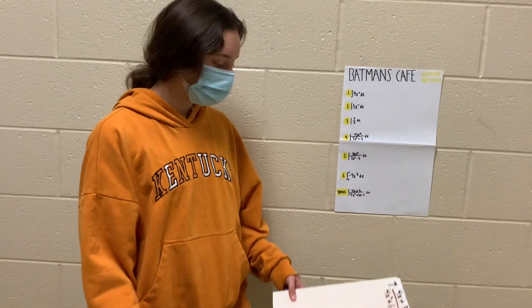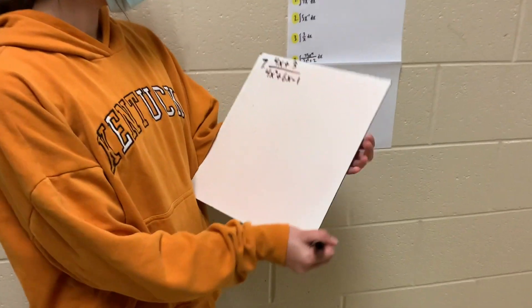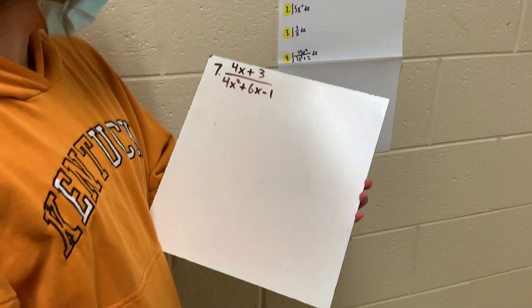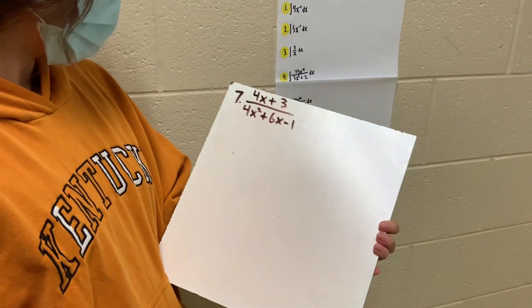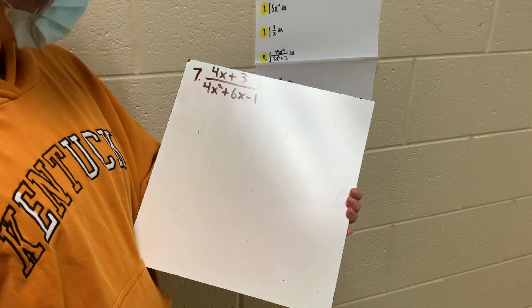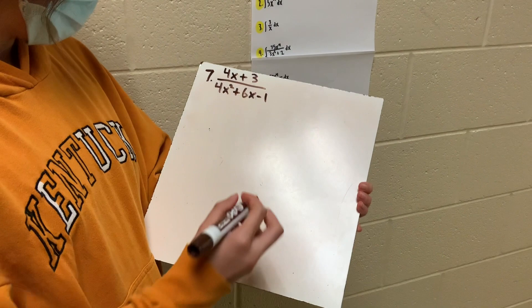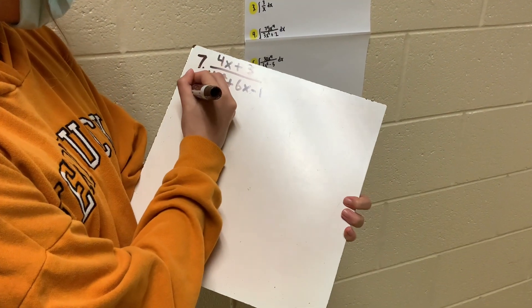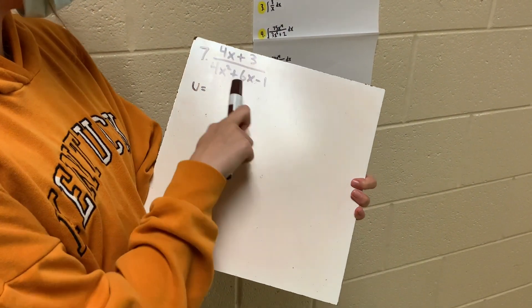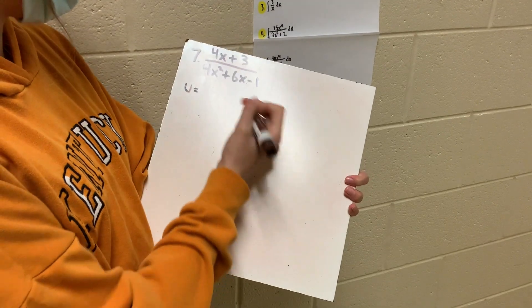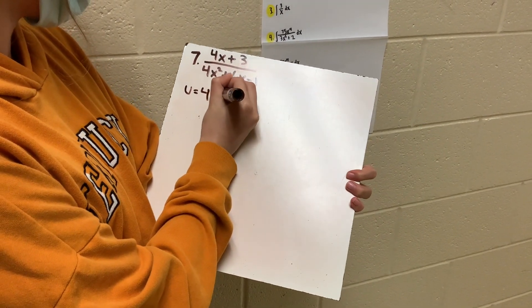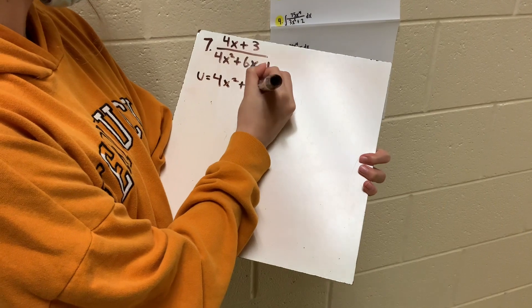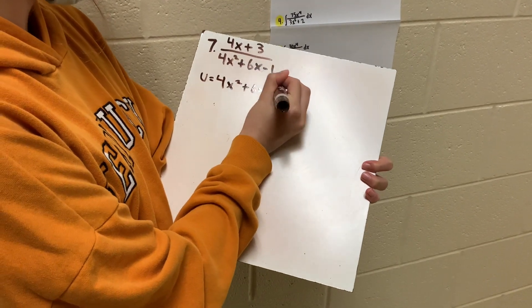Hi, can I get today's bonus? So that equation is 4x plus 3 over 4x squared plus 6x minus 1. So for this, we'll be using the u-sub method. And first we'll have to find the u, which would be equal to this trinomial because it has the higher power. So it's 4x squared plus 6x minus 1.